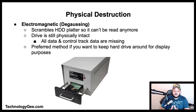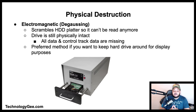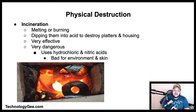Then we have electromagnetic or degaussing. This involves using a powerful device known as an electromagnetic degausser or permanent magnet degausser, which is used to scramble the hard drive platter so it cannot be read by anyone. Although the drive is still physically intact, all of the data and the control track data are missing. This method is preferred if you want to keep a hard drive simply for display purposes.